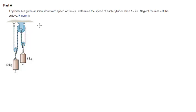Alright guys, now we're going to do this problem, which is that if cylinder A is given an initial downward velocity of 1 meter per second, determine the speed of each cylinder when the time is 4 seconds, neglect the mass of the pulleys.